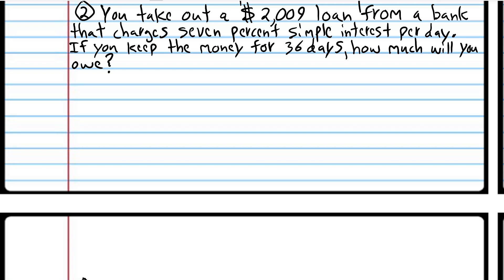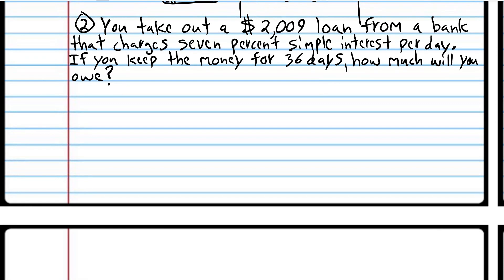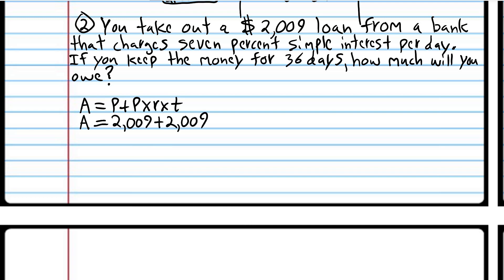You take out a $2009 loan from a bank that charges 7% simple interest per day. If you keep the money for 36 days, how much will you owe? This is not really realistic because banks don't usually charge interest per day, but this demonstrates that the time can be in days, months, or years. We're going to write down the formula we're going to use — you always have to write that formula down.